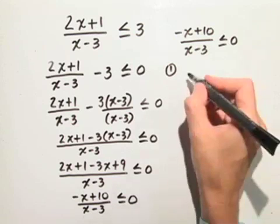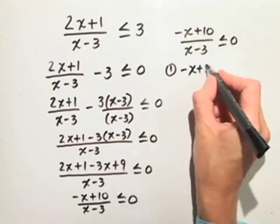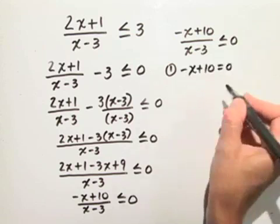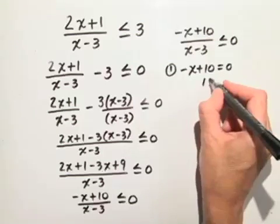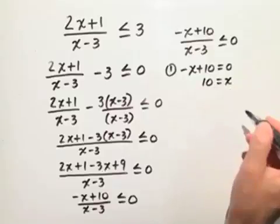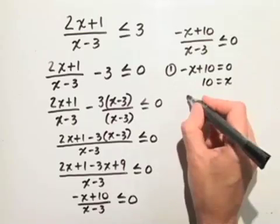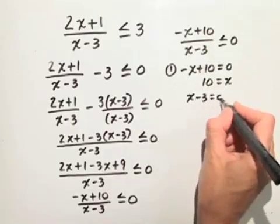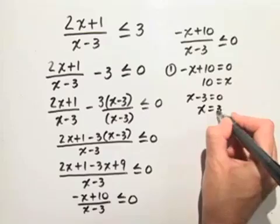So first, if we set the numerator equal to 0, negative x plus 10 is equal to 0, we get that 10 is equal to x or simply x equals 10. If we set the denominator equal to 0, we get the value x is equal to 3.